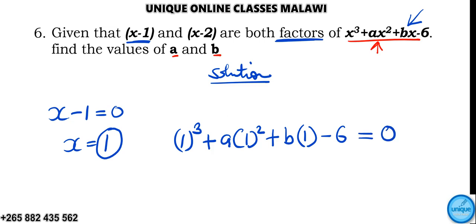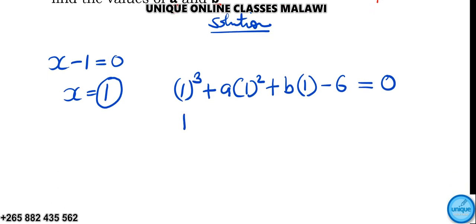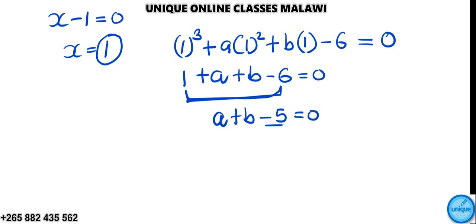The whole of this answer is equal to 0. So 1 cubed is 1, then 1 squared times a is a, then 1 times b is b, then minus 6 equals 0. So 1 plus a plus b minus 6 equals 0. I can take this to the right hand side, so it will be a plus b is equal to positive 5. This is equation number 1.